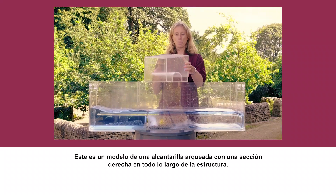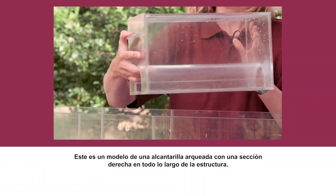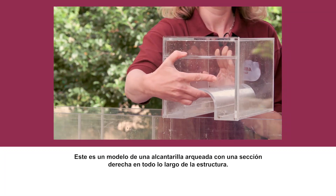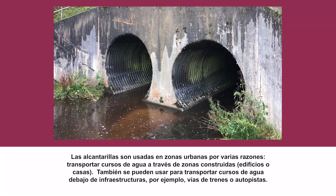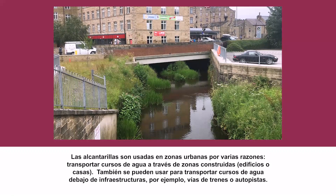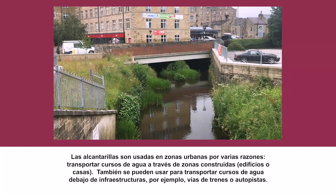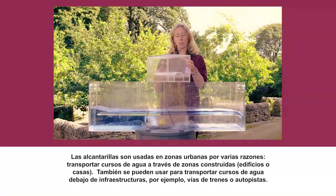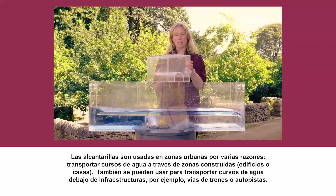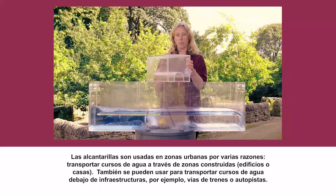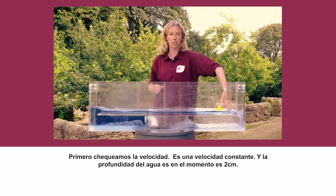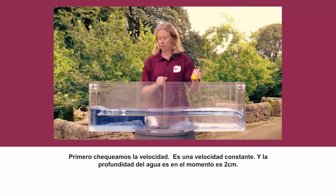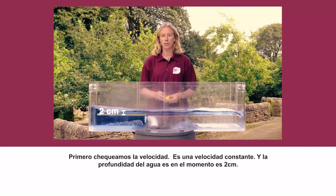This is our model of a culvert — it's an arched culvert with a straight section throughout. Culverts are used for various different reasons: in built-up areas they can transport watercourses underneath houses or buildings, and they can also be used to transport watercourses underneath infrastructure such as railways and roads. First we'll check the velocity — it's a nice constant velocity — and the height of the water at the moment is two centimetres.